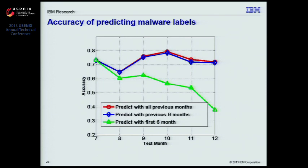The first thing we notice is that malware definitely keeps evolving. Looking at the bottom green line where we only keep using the first six months as training data, accuracy drops from higher than 0.7 in July to lower than 0.4 in December because the malware information becomes outdated. In contrast, if we keep all history — the red line — thanks to up-to-date malware information, we're able to keep prediction accuracy around 0.7 to 0.8.